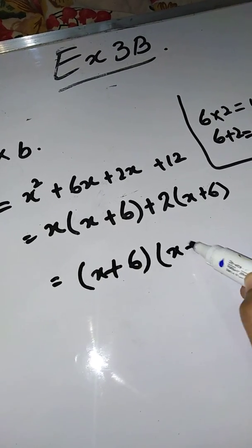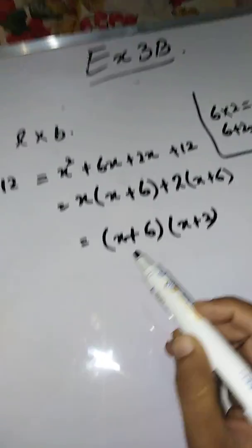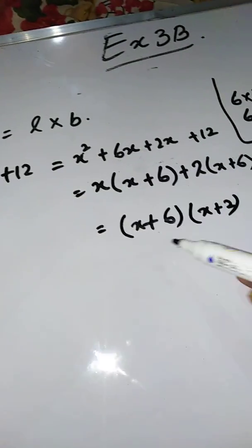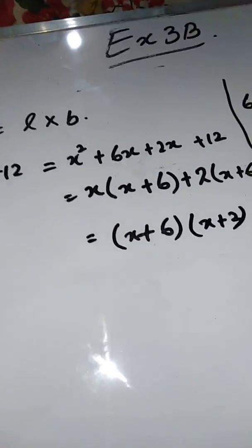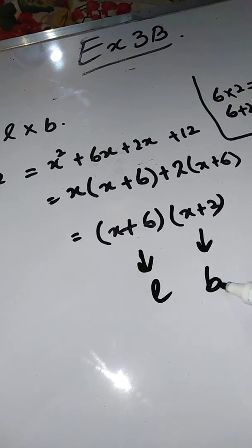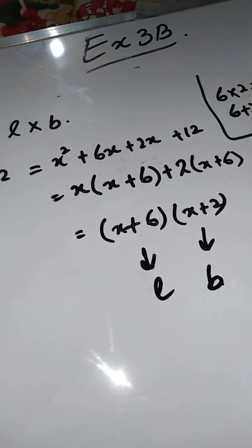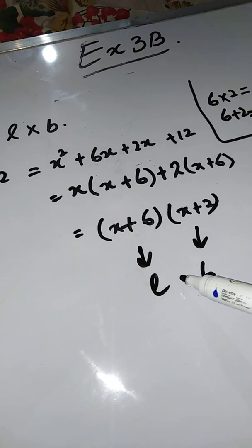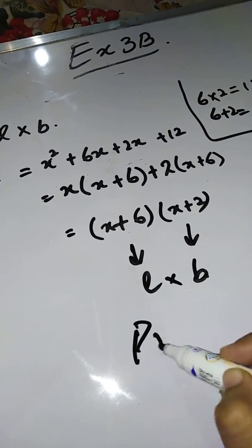Here you can see the formula is length multiplied by breadth. So this is length (x + 6) and this is breadth (x + 2). It is proved that the breadth is x + 2 as required.